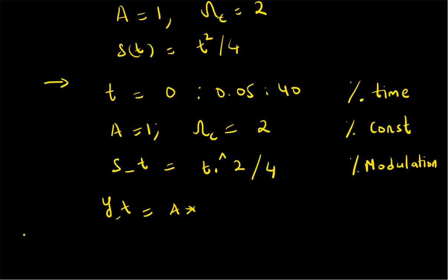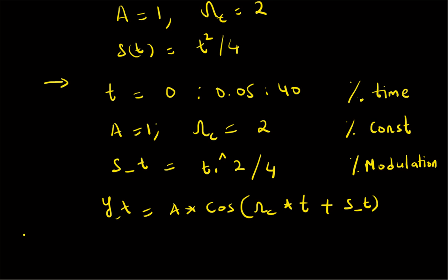Then we create the signal itself: y_t is equal to A multiplied by cos of (omega_c * t + s_t). In terms of MATLAB, that is omega_c multiplied by t plus s_t. Thus we generate the signal y(t).